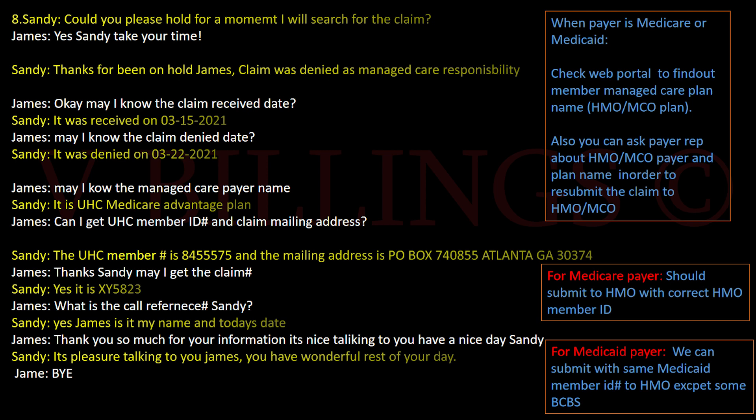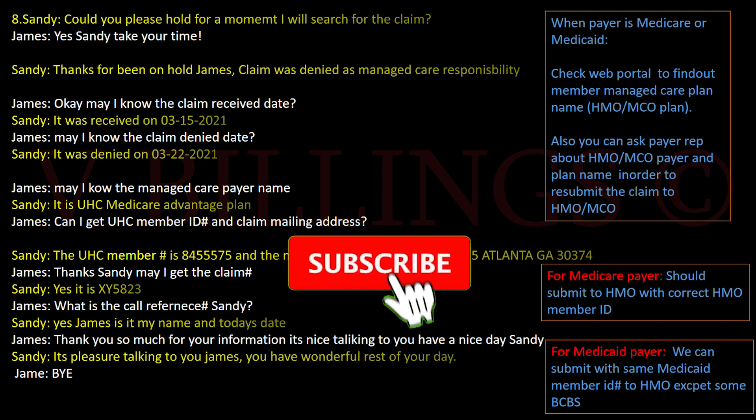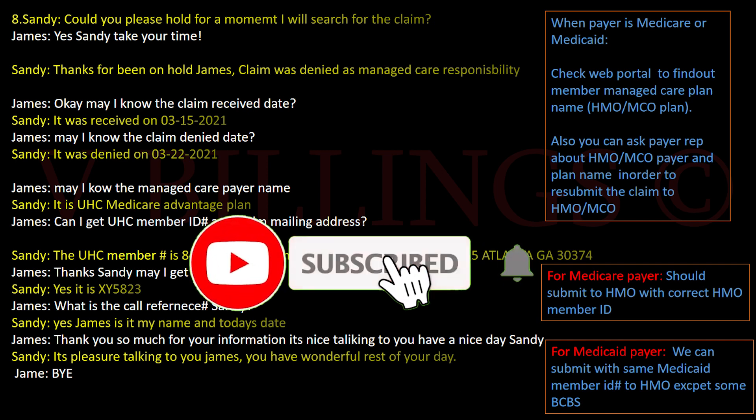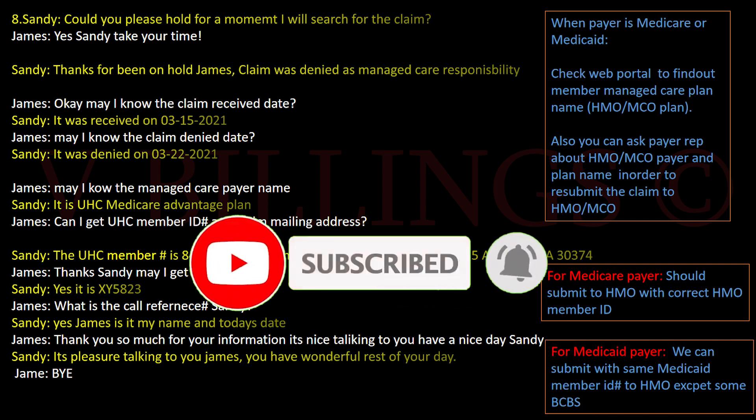And the claim mailing address? Sure, James. The mailing address is PO Box 740855, Atlanta, Georgia, zip code 30374. Thanks, Sandy. May I get a claim number? Sure, the claim number is XY5823. And what's the call reference number? The call reference number is my name and today's date. Thank you so much for your information, it's nice talking to you, have a nice day, Sandy. It's a pleasure talking to you, James, have a wonderful rest of your day. Bye bye.